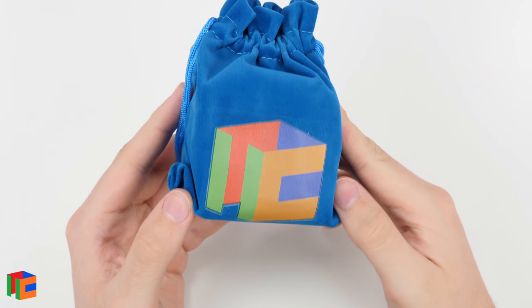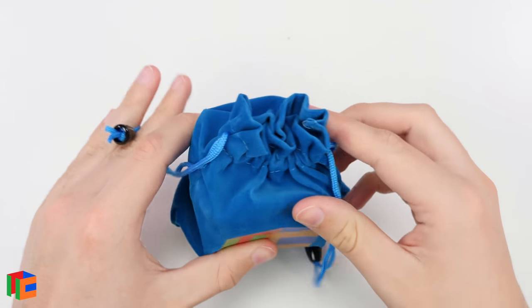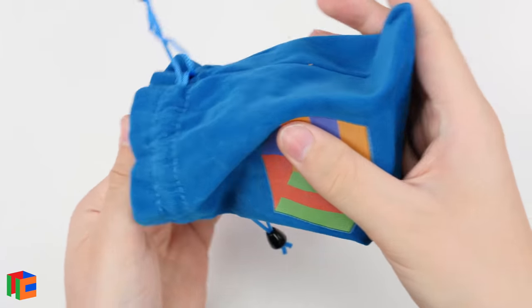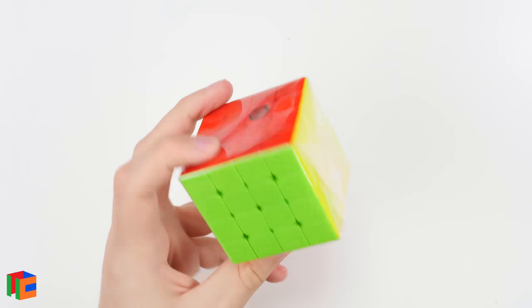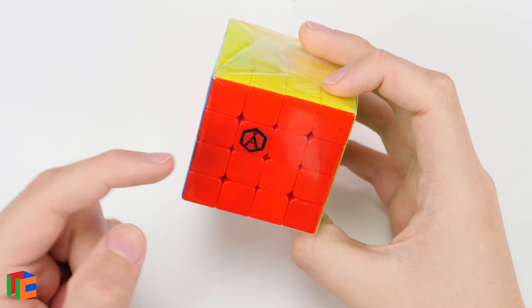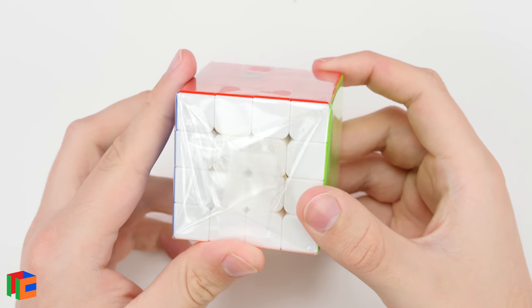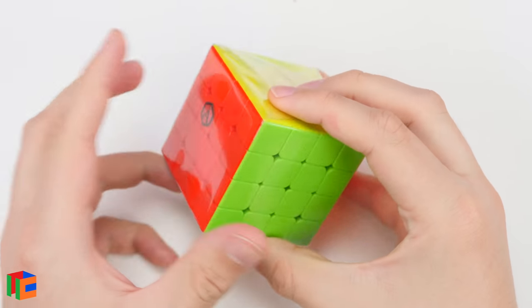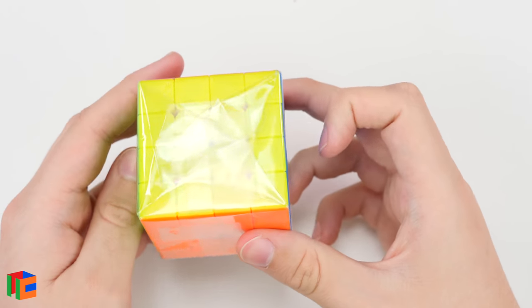So this comes in a really nice cubicle drawstring bag, a little mini cube bag here. Let's go ahead and check it out. Oh man, I'm excited for this one. So as you can tell just by that logo here, this is an Angstrom puzzle. This is the Angstrom Wu Chui M, which I'm really looking forward to checking out.